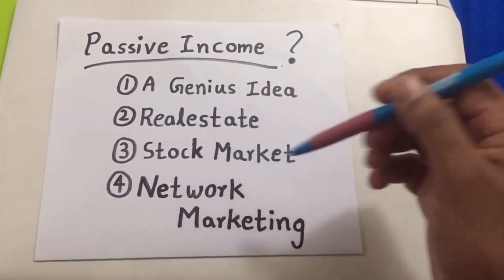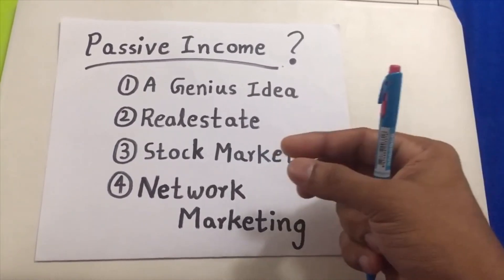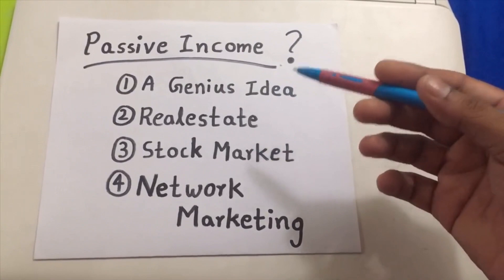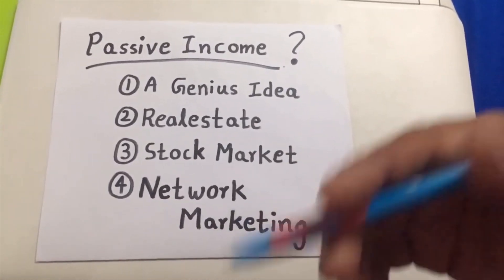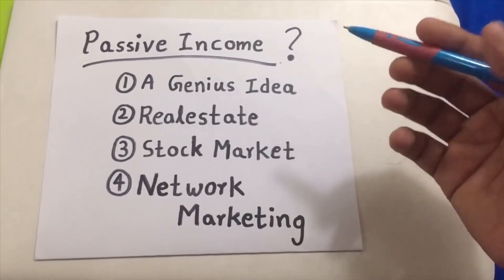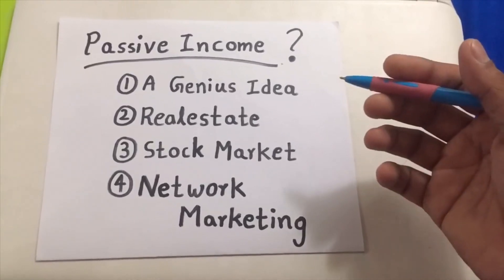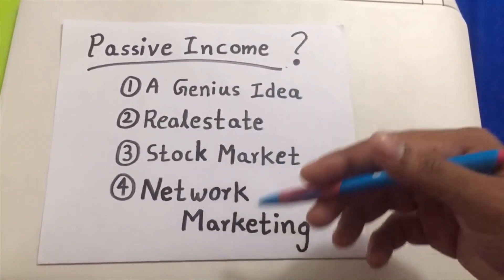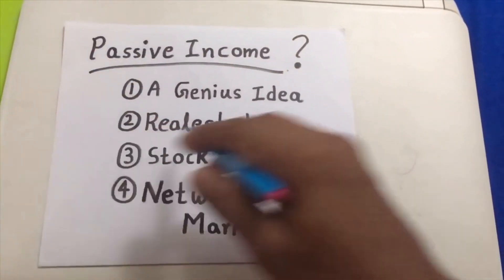The fourth way is becoming a part of network marketing. Network marketing you can start with a small amount of money by spending that money to buy a product. You are not just investing money, you are buying a product. And with that product you have the chance of building a huge organization. Eventually, if you build a huge organization, you can make a passive income.